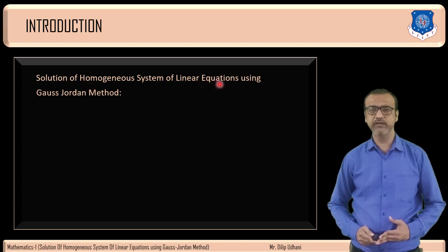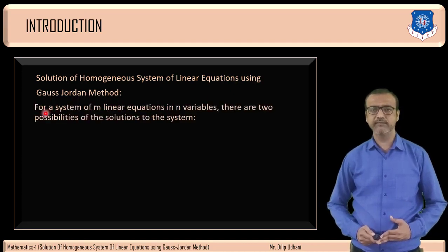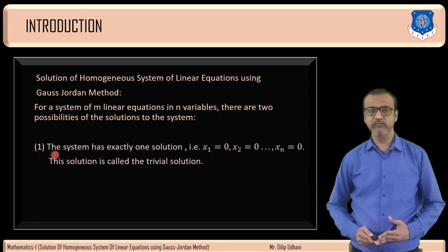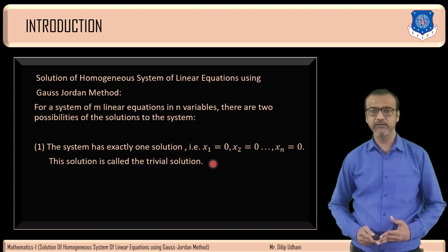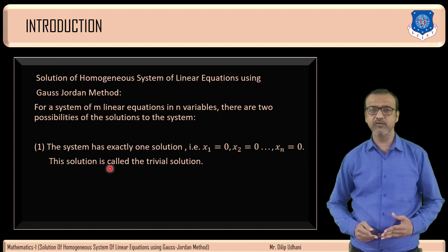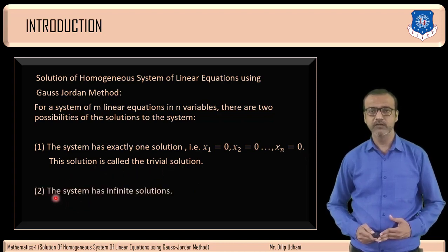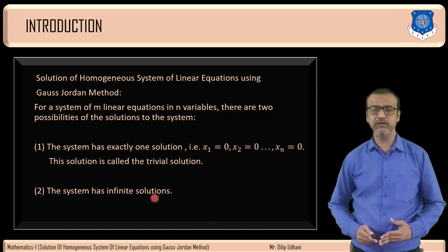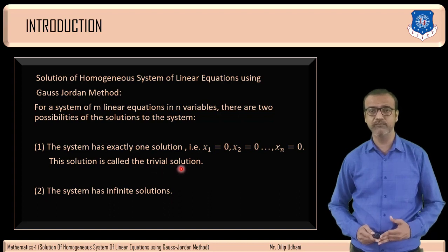Now we will see how to find the solution of a homogeneous system of linear equations using Gauss-Jordan method. For a system of n linear equations in n variables there are two possibilities: possibility number one, the system has exactly one solution — that is x1 = 0, x2 = 0, up to xn = 0 — and this solution is called the trivial solution.